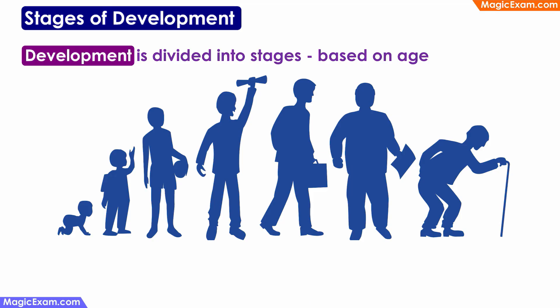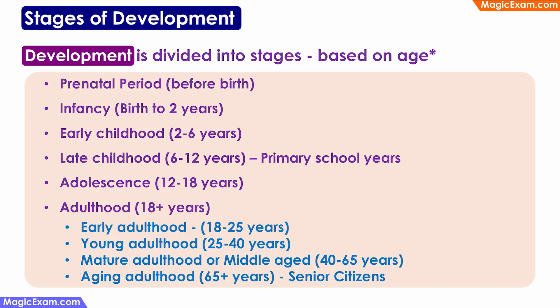We frequently see questions about the various stages of development because development is divided into various stages based on the age of the person. The stages start with the prenatal period, which is before birth, then infancy from birth to 2 years, early childhood, late childhood, adolescence, and adulthood. Adulthood, which is 18 plus, has been further divided into early, young, mature, and aging adulthood.